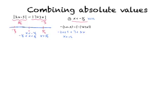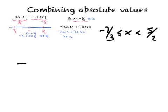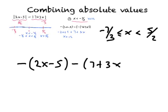For the next part, we're on the interval between minus seven thirds and five halves: minus 7 over 3 is less than x, less than five halves. On this piece, 7 plus 3x will be positive, so we leave it alone. On the other hand, 2x minus 5 is still negative because we're to the left of five halves, so we still negate that part: negative (2x minus 5), minus (7 plus 3x).